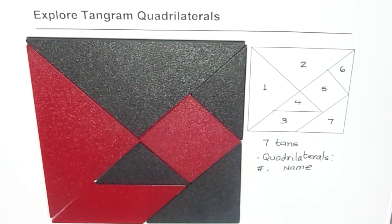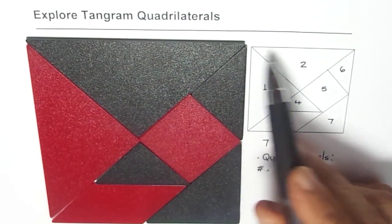Now you got the answer, right? There are three quadrilaterals which you can see here. One as a whole is a big square, right? So if you see this, you see this big square.